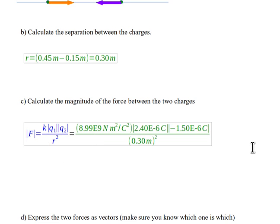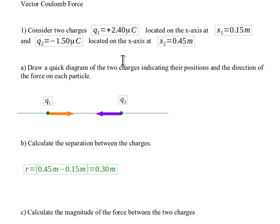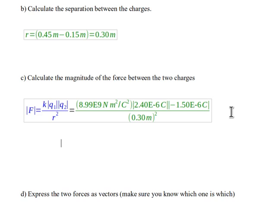Then we have to put our two charges in. And notice the first charge is plus 2.4 microcoulombs. So remember that when you put that in, it's the 2.4 times 10 to the minus sixth, because that's what the micro means, Coulombs.